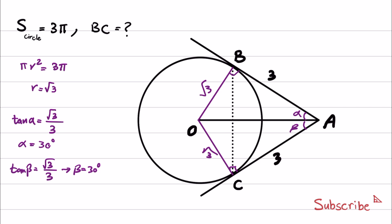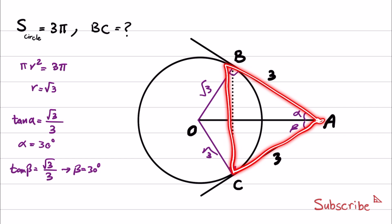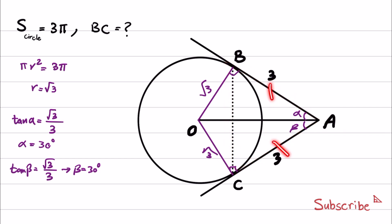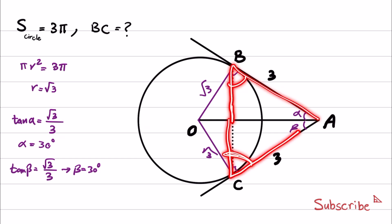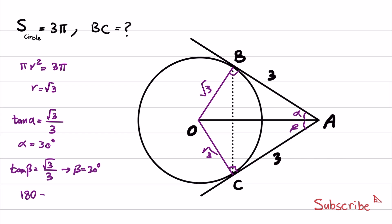So these two angles are each 30 degrees, and angle BAC is 60 degrees. The sides AB and AC of triangle ABC are equal to each other, so we have an isosceles triangle. Since angle BAC is 60 degrees, the remaining two angles are equal, computed as (180 minus 60) divided by 2, which also gives 60 degrees each.